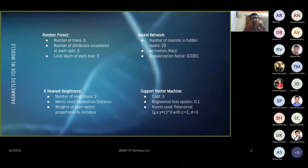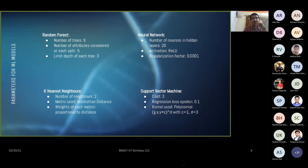The test data is the same as training data because splitting 21 samples would lead to either too few training samples or too few test samples — either way introducing bias. So all 21 samples were used for both training and test data. For random forest: 9 trees, 5 attributes per split, depth of 3. For neural network: 20 neurons, ReLU activation, regularization factor of 0.001. For KNN: 2 neighbors, Manhattan distance, weights proportional to distance. For SVM: cost of 3, regression loss epsilon of 1, polynomial kernel with P=1 and D=3.